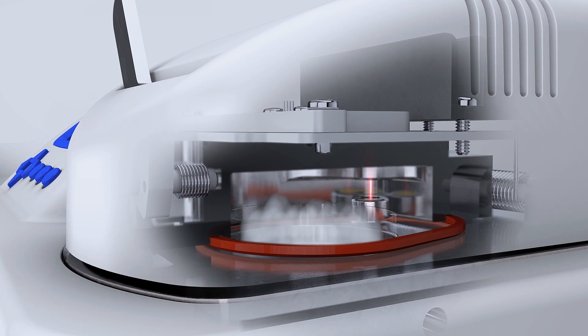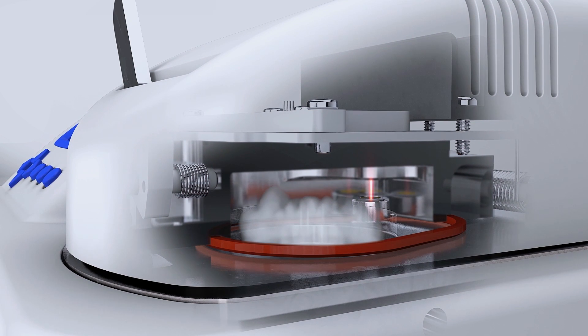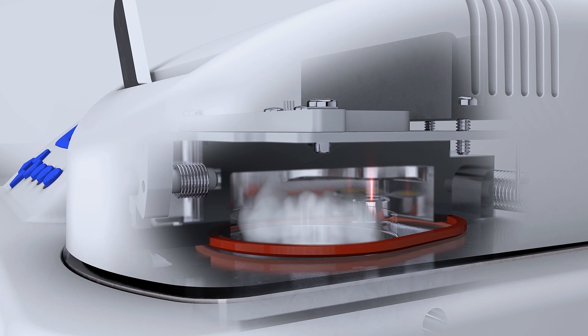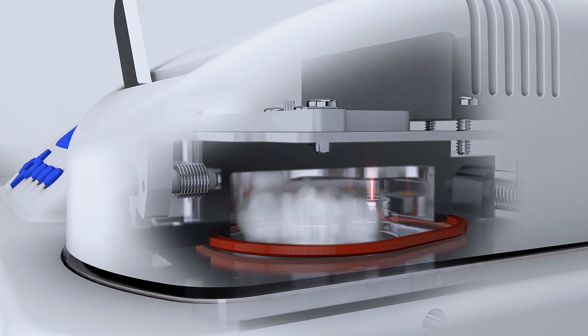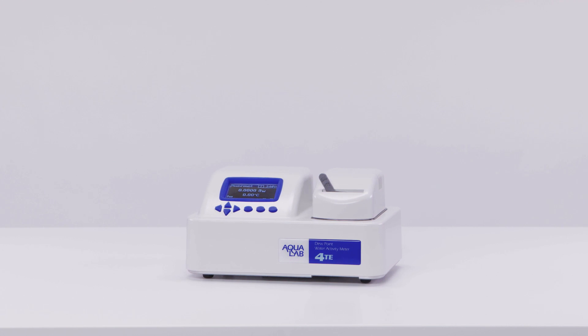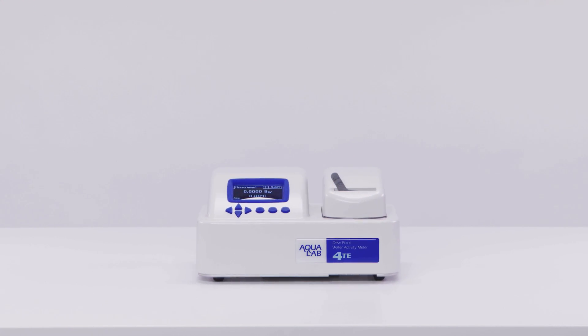The chilled mirror method is a primary measurement method, and it's the fastest, most accurate way to measure water activity. This is our most popular water activity meter, and it's the choice of about two-thirds of our customers.